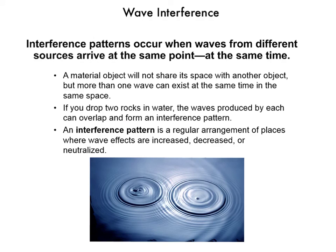Now we turn our attention to wave behavior, starting with wave interference. Material objects like rocks or cars cannot share the same space at the same time. However, with waves, more than one wave can exist at the same time in the same space. For example, dropping two rocks into water causes waves to propagate out and overlap, forming an interference pattern — a regular arrangement of places where wave effects are increased, decreased, or neutralized. When more than one wave occupies the same space, the displacements of the medium add up at every point. This is called the superposition principle.